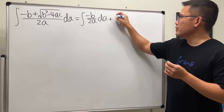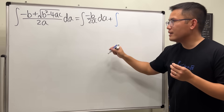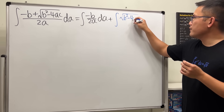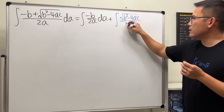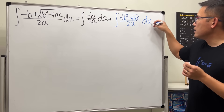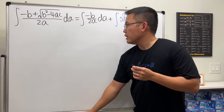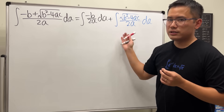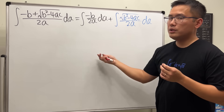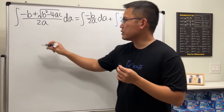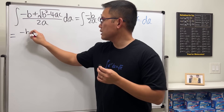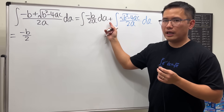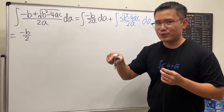For the second part — I'll put it down in blue because this is the harder one — we have the integral of √(b² − 4ac) over 2a. In the a-world, a is the variable and the rest are constants. So negative b over 2a is just a constant multiple. Integrating 1/a in the a-world, we get natural log of the absolute value of a.